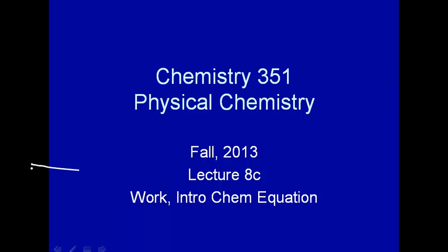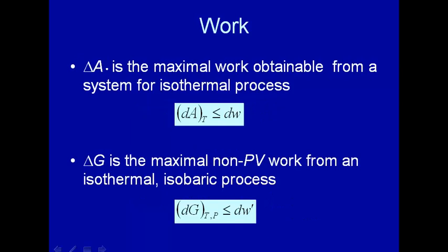Here we're going to consider the ramifications of what we've been talking about in the combined first and second laws of thermodynamics in terms of the amount of work you can get out of a system. What I want to show is that delta A or dA is the maximum work obtainable from a system for an isothermal process, where delta G is the maximal non-PV work from an isothermal isobaric process.